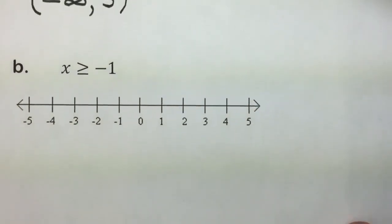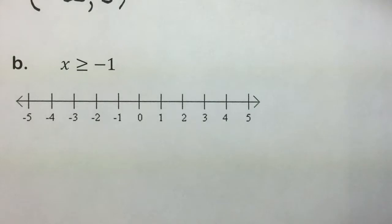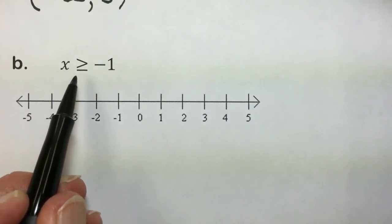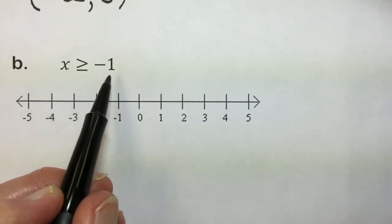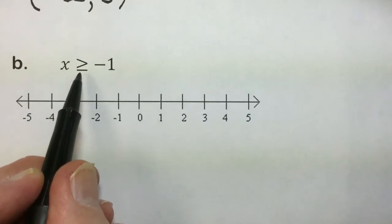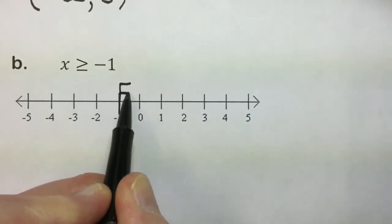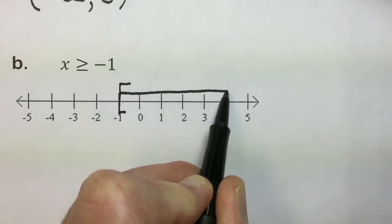Let's take a look at this next inequality. We'll graph it so we have a picture of what the solution set looks like. We want all the values of x such that x is greater than or equal to negative 1. Because of that equal, we will include negative 1 in our solution. And the values that are greater are to the right.